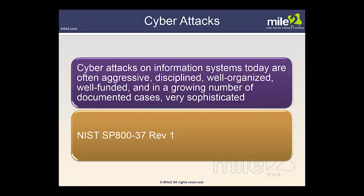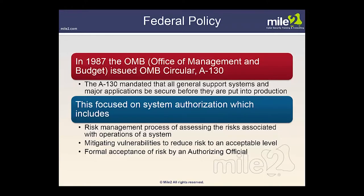There is the NIST Special Publication 800-37 Revision 1. The idea behind this is to transform the traditional certification and accreditation process into a six-step risk management framework. The second step of the RMF is to select the appropriate subset of security controls from the control catalog found in NIST Special Publication 800-53. As we proceed, you'll see these six steps in great detail.